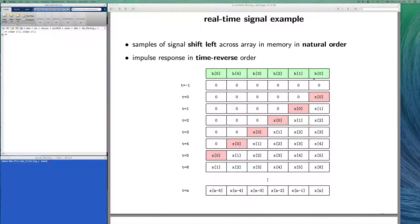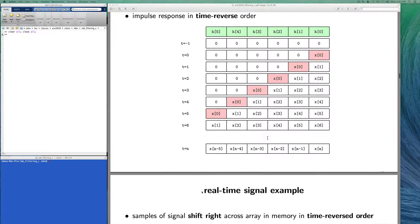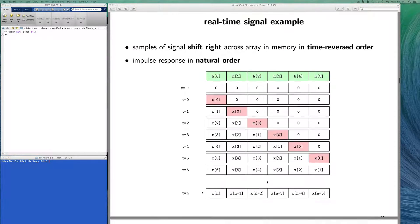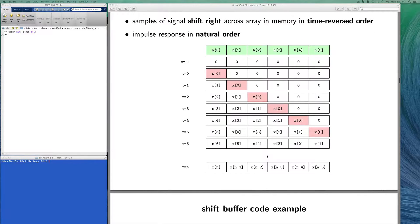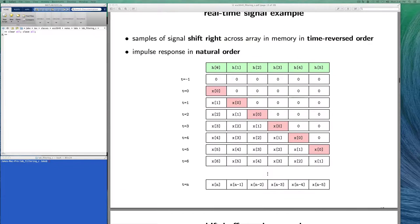So this shows how the data moves through the arrays when we're doing convolution or filtering. In this case, we have the impulse response in time reversed order and the data in natural order. We can change that around and put the impulse response in natural order, and then the only difference is that the data shifts from left to right across the array instead of from right to left.